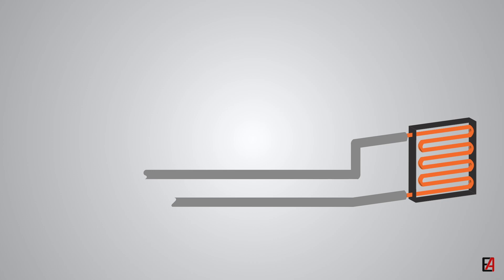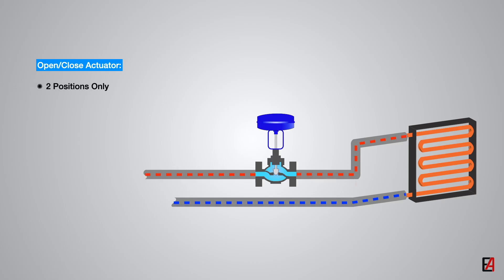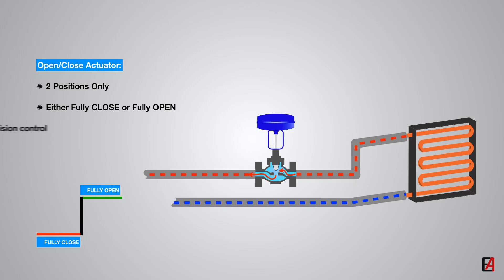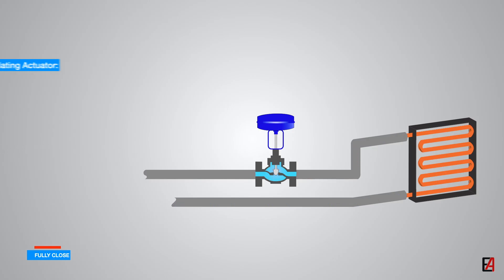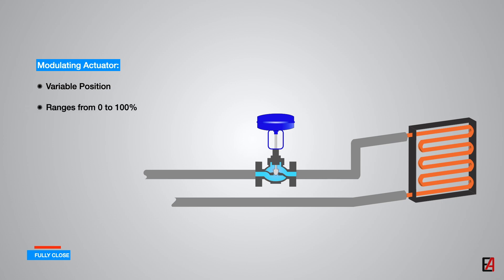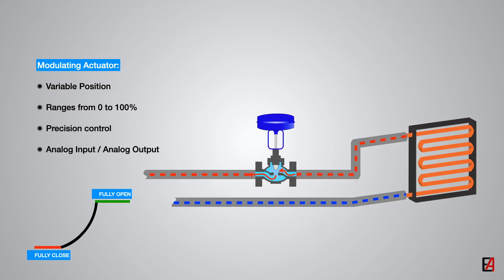Typically, control valve actuators can also be either of the following types. The first is the open-close actuator, which operates only in two positions — either fully closed or fully open. This type does not provide precision control as the valve can only be in two positions, and the BMS signals used are digital input and digital output. The next is the modulating actuator, where the control valve can be operated in various positions ranging from 0 to 100%, with 0 being fully closed and 100 being fully open. This type provides precision control with PID controllers, and the BMS signals used are analog input and analog output.